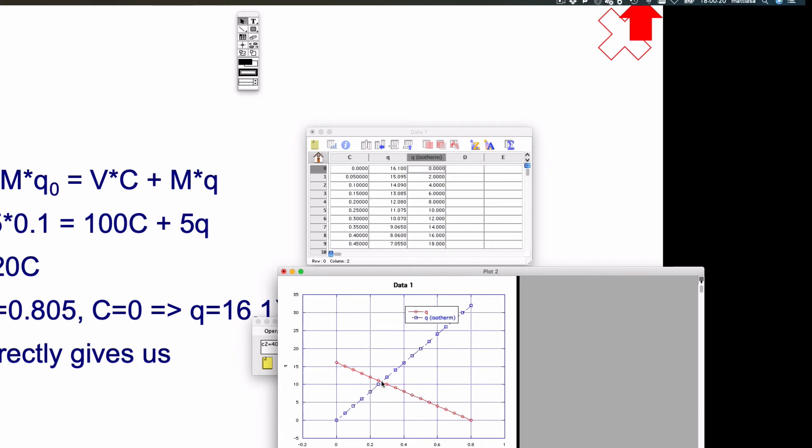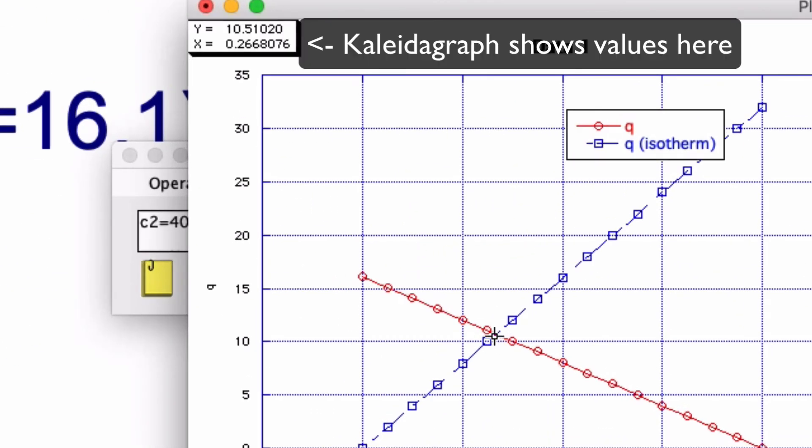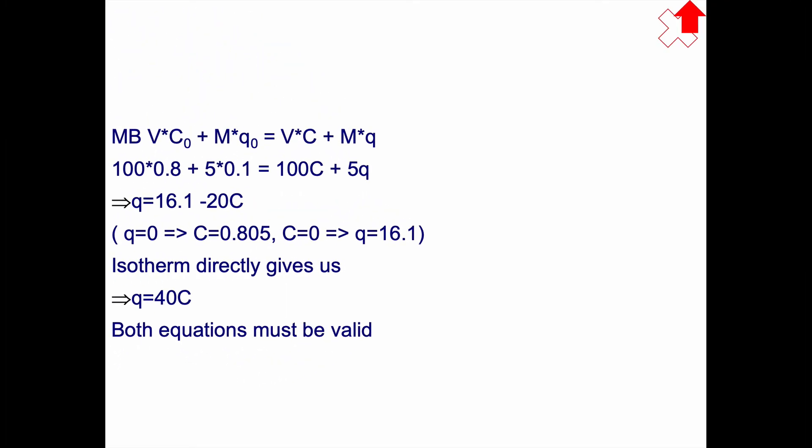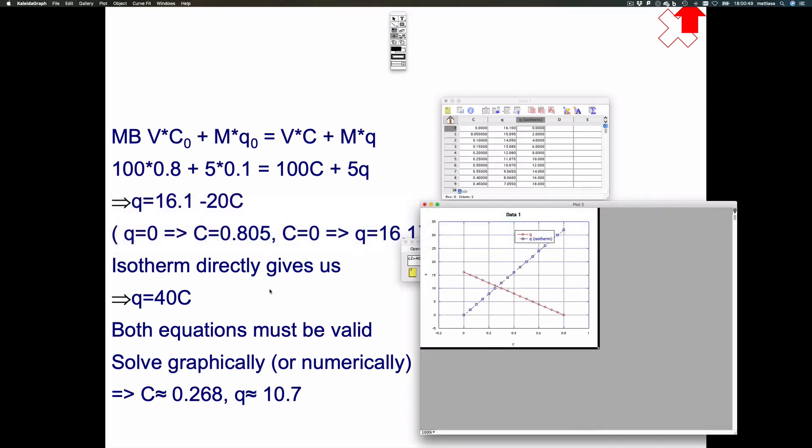And there is our solution, so let's find that value. That's something like 0.267, something like that. Because both equations must be valid, we can solve this graphically, but you can also solve it numerically if you want. The concentration is approximately 0.268, and q equals 10.7, something like that.